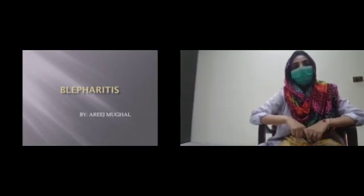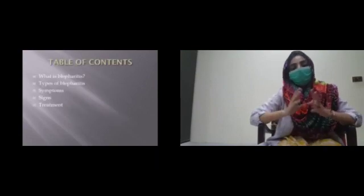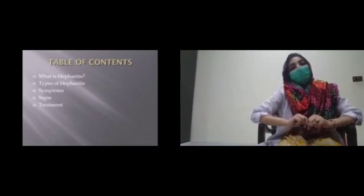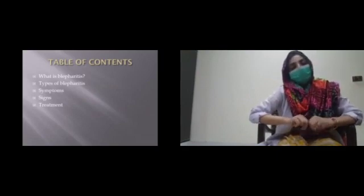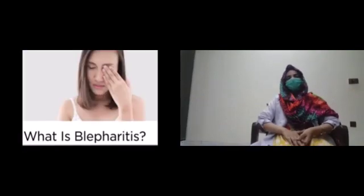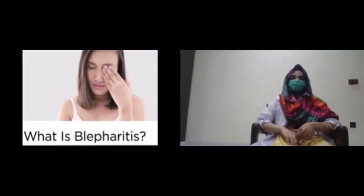First, what is blepharitis? Blepharitis is the inflammation of the eyelids. There are two types: anterior blepharitis and posterior blepharitis. Anterior blepharitis is further classified as staphylococcal anterior blepharitis and seborrheic anterior blepharitis. Anterior blepharitis mainly covers the spectrum of the eyelashes or the base of the eyelashes.